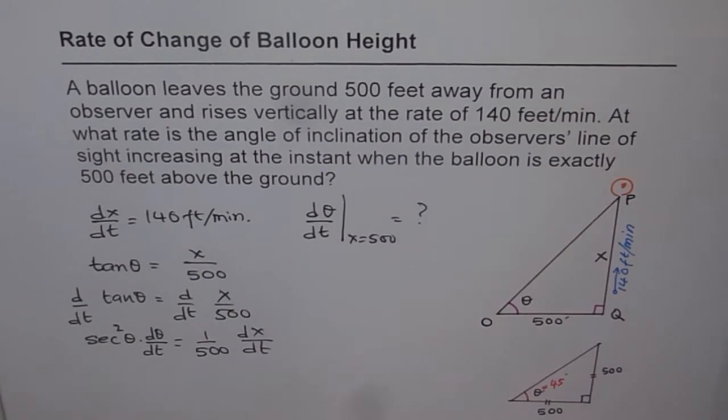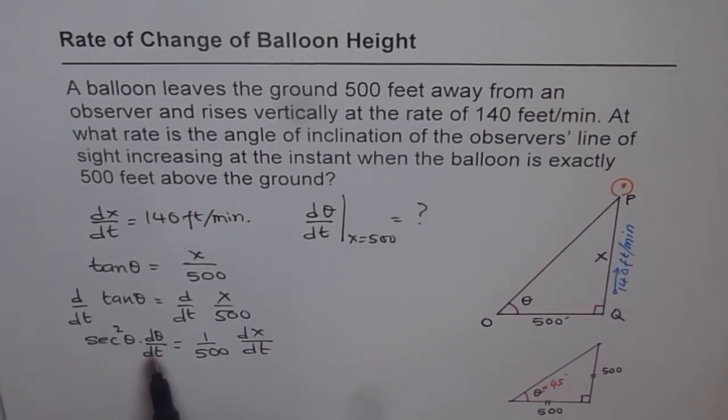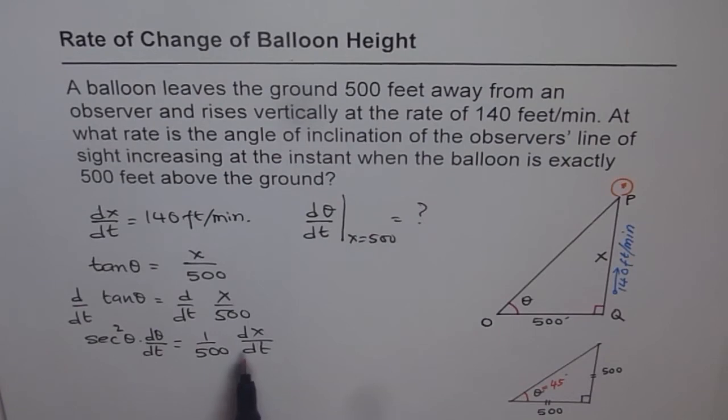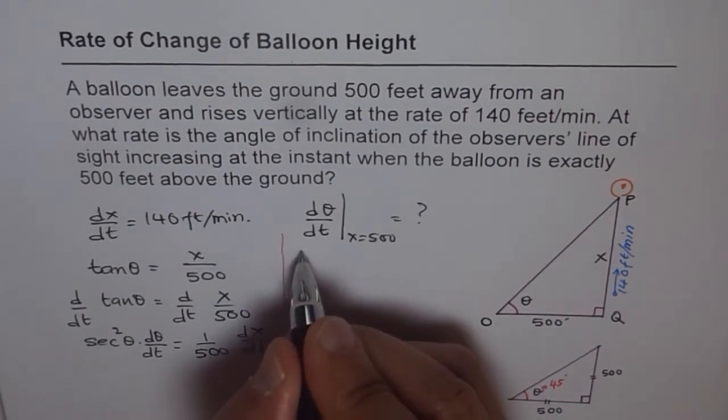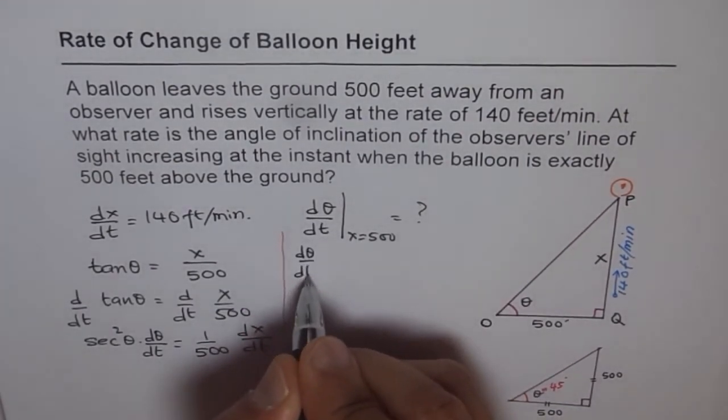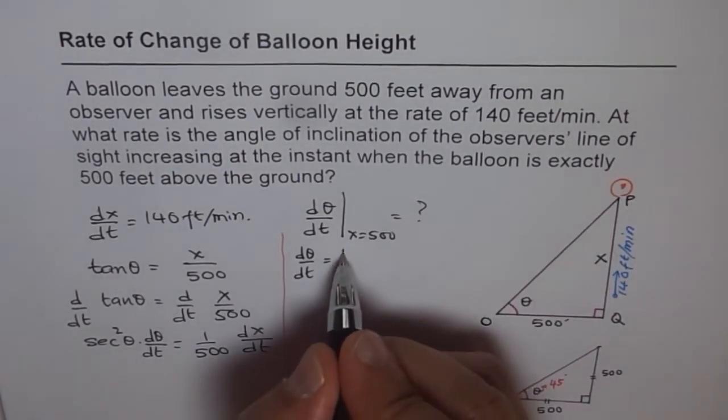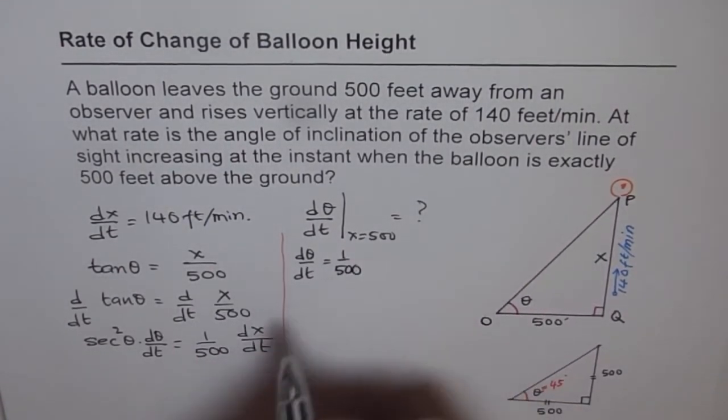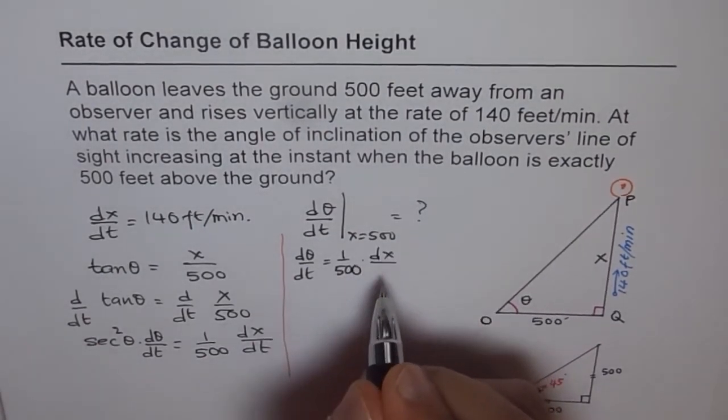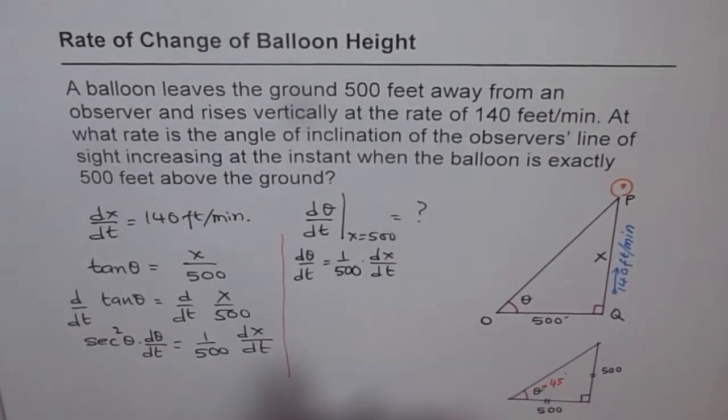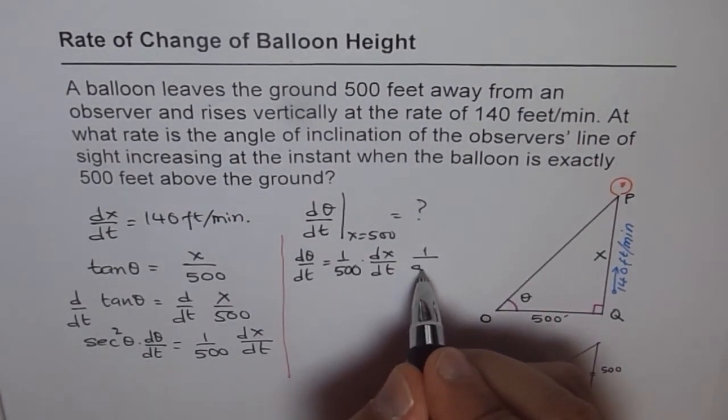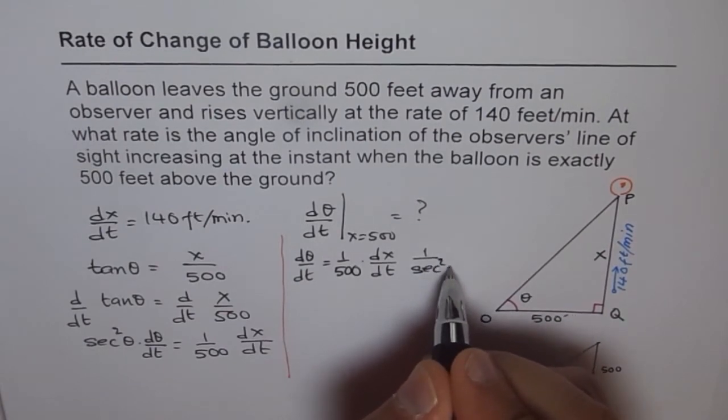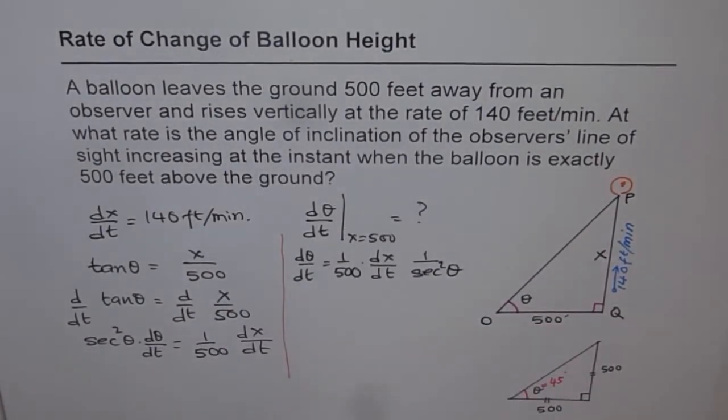Now from here, we can always isolate rate of change of angle and find our answer. So let's do that. So we can now write, dθ/dt is equal to 1 over 500, 1 over 500 dx/dt. First let me write all these things, then we'll substitute values. And 1 over sec²θ. So 1 over sec²θ. That's the angle. So that is what we get.